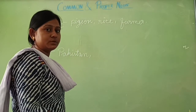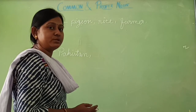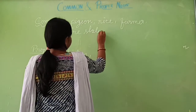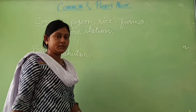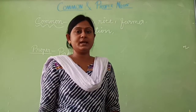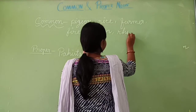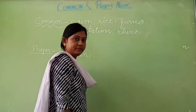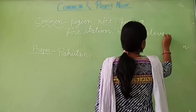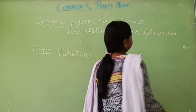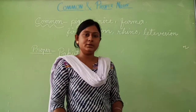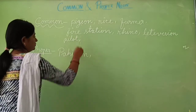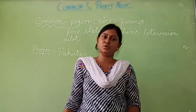When there is a special name given to a fire station then it is a proper noun, but here it is just 'fire station', so it is a common noun. Next is Rhino. Rhino is an animal — a common animal. Next is Television. You all have television in your home, so it is a common name. Next is Pilot — a common name. Next is Baby — also a common name.